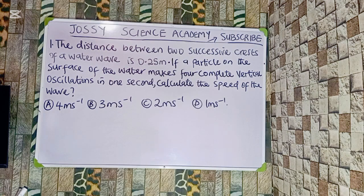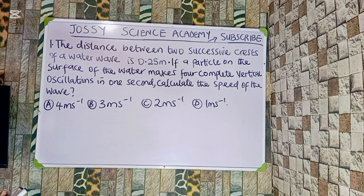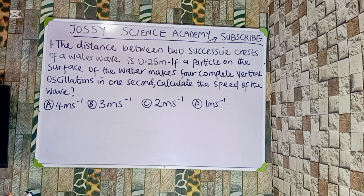The distance between two successive crests of a water wave is 0.25 meters. If a particle on the surface of the water makes four complete vertical oscillations in one second, calculate the speed of the wave. Option A: 4 meters per second. Option B: 3 meters per second. Option C: 2 meters per second. Option D: 1 meter per second.